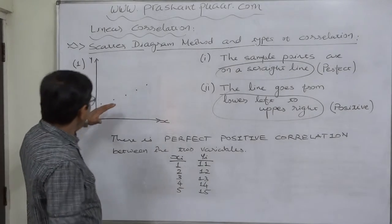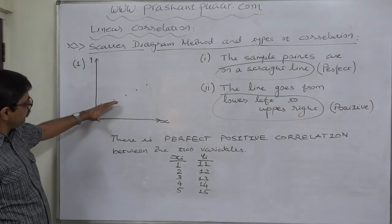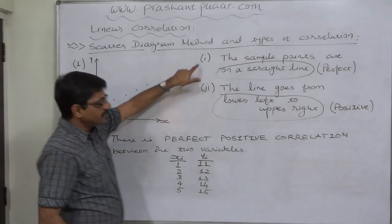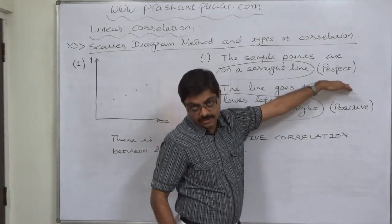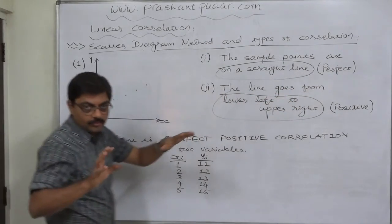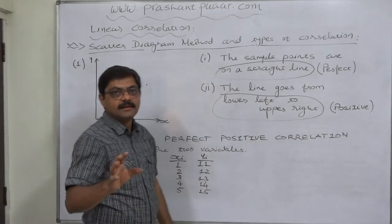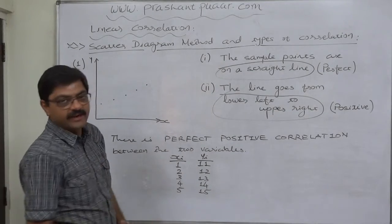All the simple points are on a straight line. That shows the perfectness of relationship. Being all the simple points on a straight line suggests that there is perfect relationship.